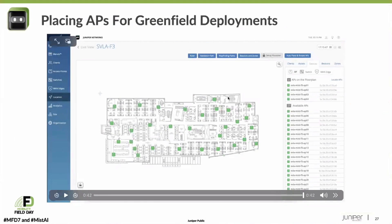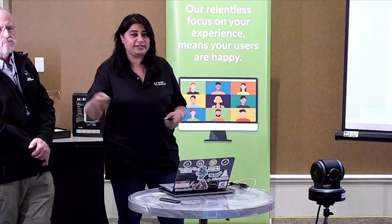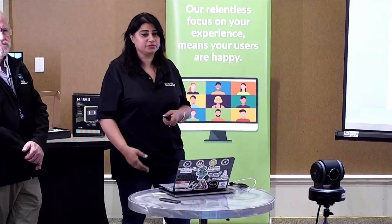How much time do you need — can you do it as soon as you're done installing the last AP? That is correct. Our testing shows it should be done within 10 to 20 minutes. The goal is that when the installer is done, they click auto-place, it happens, and they can go home. No need to come back the next day or do a site survey to validate — AI is doing the job for you.